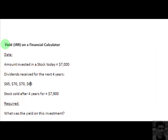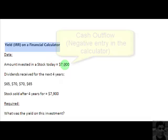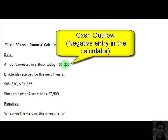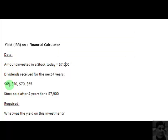Hello and welcome to this screencast in which we are going to see how to find out the yield or the internal rate of return on a financial calculator. We have $7,000 which we invest in a stock today, and for the next four years we are going to receive the following dividends on this stock.